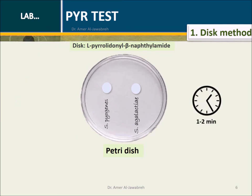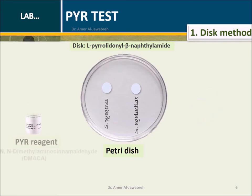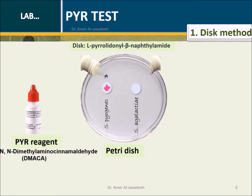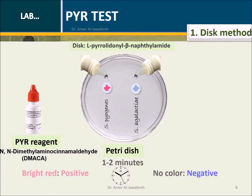Incubate at room temperature for two minutes. Add one drop of PYR agent on each disc. Observe for the development of a bright red color within one to two minutes.